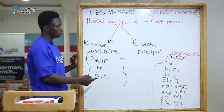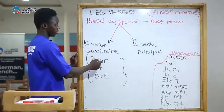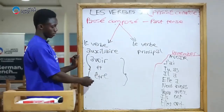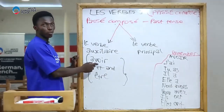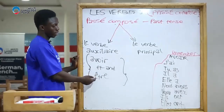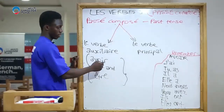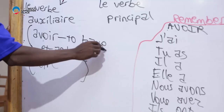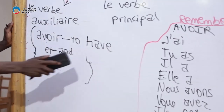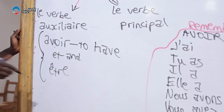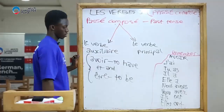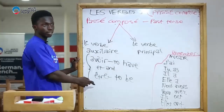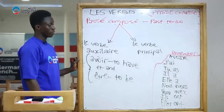Now, the two major auxiliary verbs we have in French are avoir et être. Avoir et être. Avoir veut dire to have, et être veut dire to be. Avoir et être are the two auxiliary verbs we have in French.